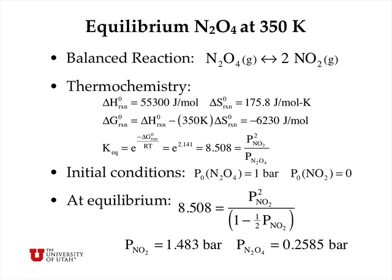So now if we started with an initial condition of N2O4 at one bar pressure, for example, and no NO2, what would the equilibrium concentrations of the two gases be? Well, we know that the ratio of the equilibrium pressures must be 8.508, and so we can express that as the partial pressure of NO2, which we don't yet know, divided by one bar, which is the initial pressure of N2O4, minus one-half of whatever the equilibrium partial pressure of NO2 is, and the one-half just comes from the stoichiometric coefficients.